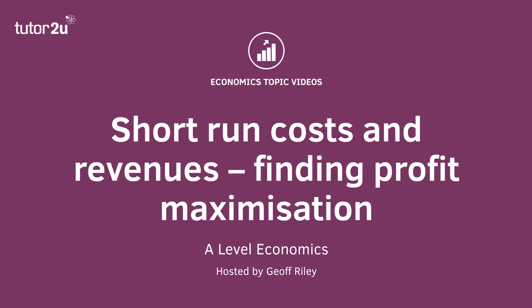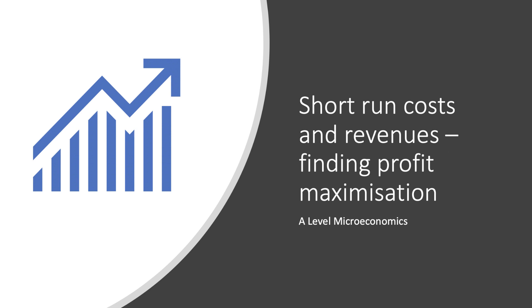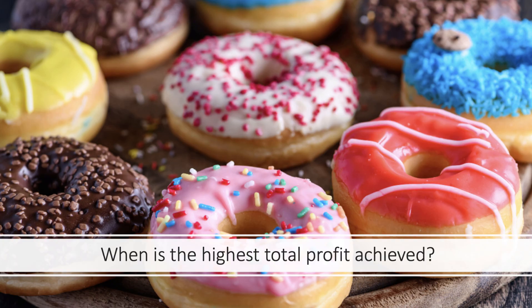Hi there and welcome to a micro video for theme 3 economics. We're going to look at an example of how a business might find the profit maximizing output using cost and revenue data in the short run. We'll take the example of a bakery producing batches of doughnuts to consumers.